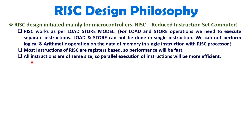You will observe that instruction size is almost the same for all instructions. As the instruction size is the same for all instructions, parallel execution in pipelining will be very efficient. If instruction size is different, you will have more bubbles in the pipeline. But if instruction size is the same, your pipelining will be efficient. So instruction size matters a lot. With RISC architecture, most of the instructions have the same size, so the pipeline will be efficient.